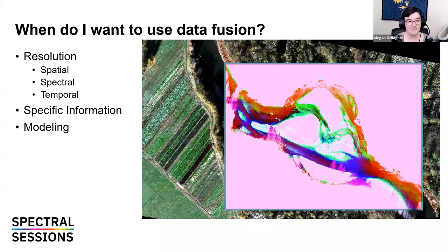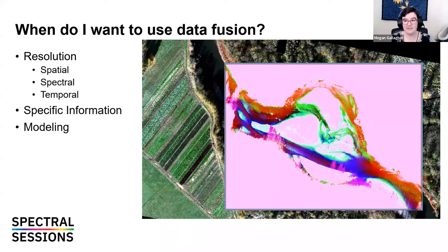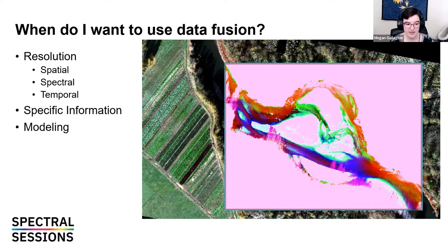The next reason you might need data fusion is for specific information needed. Optical data has an amazing amount of resources — multispectral, hyperspectral — you can pull out so many unique things. You can't pull out height, though. So if I need height or topography information, I'm absolutely going to look for LiDAR and add it to my stack. Sensors that add unique information are also exceptionally useful. Lastly, there's modeling — sometimes you throw in so many disparate data sources depending on what you're doing: weather, snow melt, water, agriculture, different resolutions.